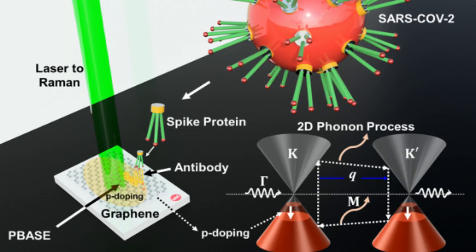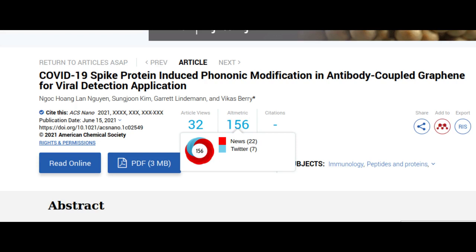Their findings are published in the journal ACS Nano. The researchers say that they have been developing graphene sensors for many years. In the past, they have built detectors for cancer cells and ALS.